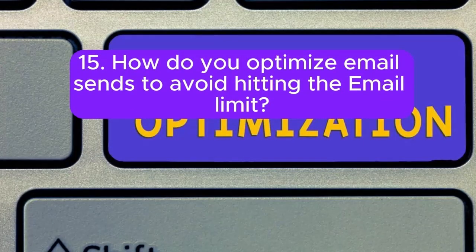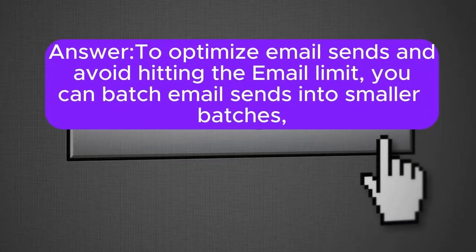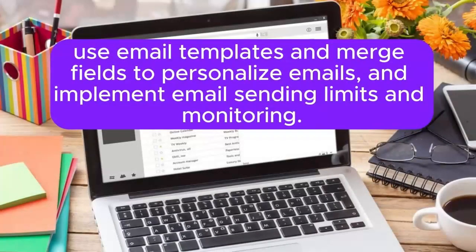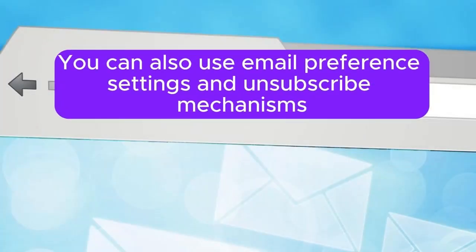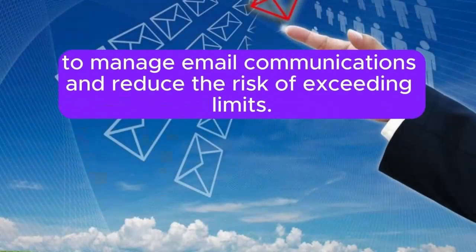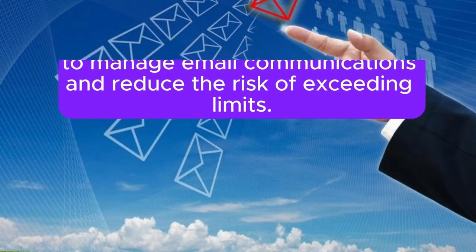Question 15: How do you optimize email sends to avoid hitting the email limit? Answer: To optimize email sends, you can batch email sends into smaller batches, use email templates and merge fields to personalize emails, and implement email sending limits and monitoring. You can also use email preference settings and unsubscribe mechanisms to manage email communications and reduce the risk of exceeding limits.